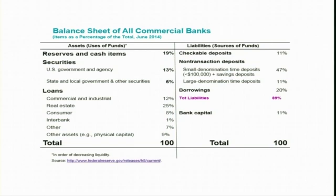Liabilities are the sources of funds for banks, and assets are the uses of those funds. Look at this balance sheet of all commercial banks in the US — this will give you a fair idea of how a bank balance sheet looks. On the left-hand side you can see reserves, securities, loans, etc. On the right-hand side you can see checkable deposits, non-transaction deposits, borrowings, and bank capital. We will discuss each one by one.